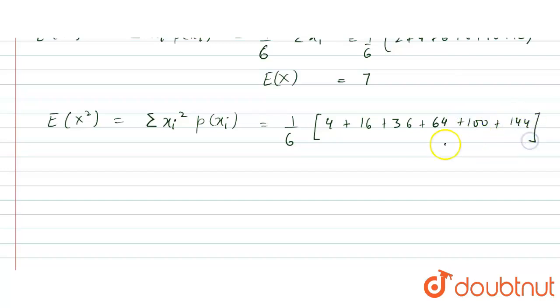After simplification, I will get expectation of x squared as 60.67.